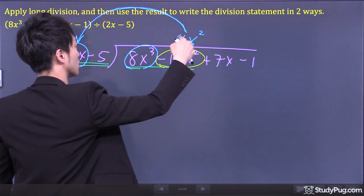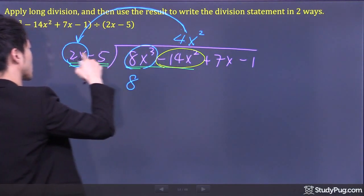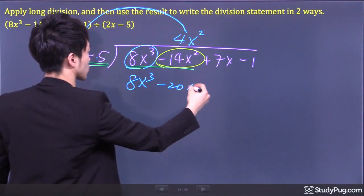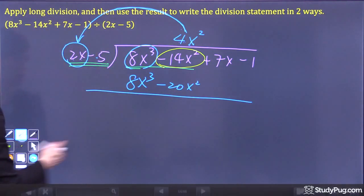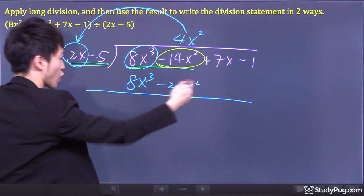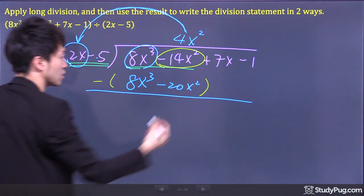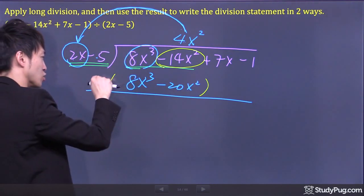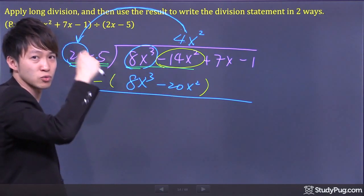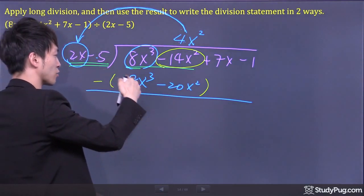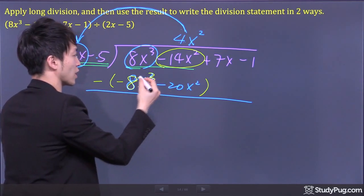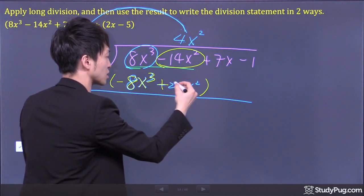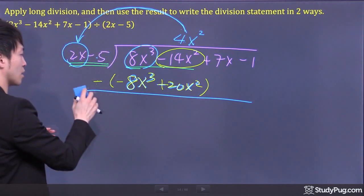So once again, 4x² times 2x gives 8x³, and 4x² times negative 5 gives negative 20x². Now pay attention: since we have to go top subtract the bottom, you just bring the negative sign in to each term right away. The first term becomes negative 8x³; the second term — negative negative — becomes positive 20x².